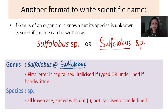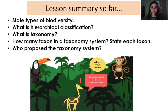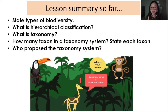So that's it for the binomial nomenclature system, and we'll have a very short summary of what we've learned so far. Try to answer these questions on your own: What are the types of biodiversity? What is hierarchical classification? What is taxonomy? How many taxons are in a taxonomy system? Try to state each taxon. Who proposed the taxonomy system? If you can't answer any of these questions, try to go back to the notes or to this video once again. If you're good, let's proceed with the next part of the lesson.